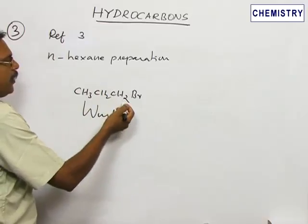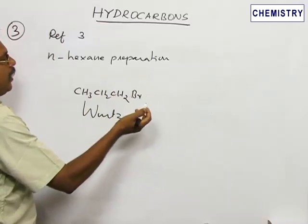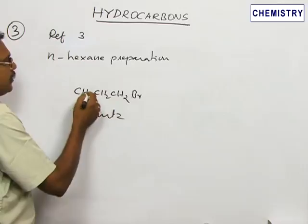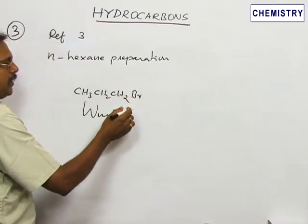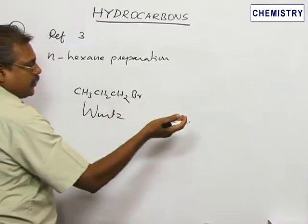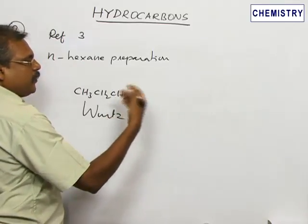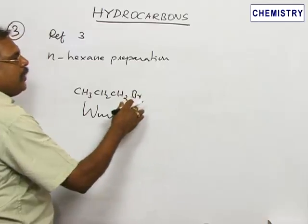Here 3 carbons get converted into 6 carbon alkane, so we have N-hexane. CH3CH2CH2Br is a better reagent because all other combinations will give many side products. So number of products are more, separation will be a tedious process.